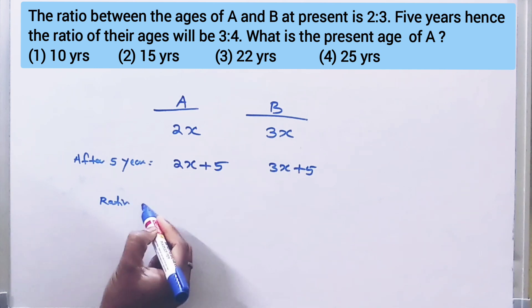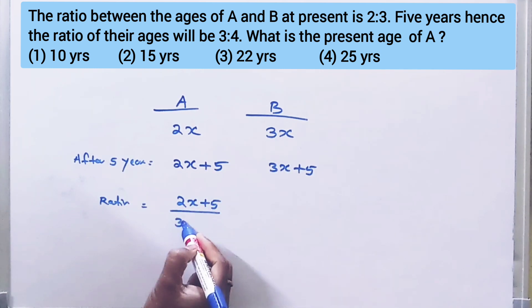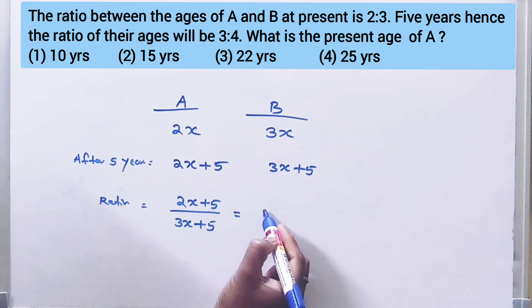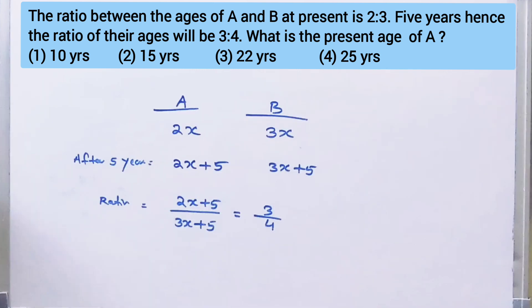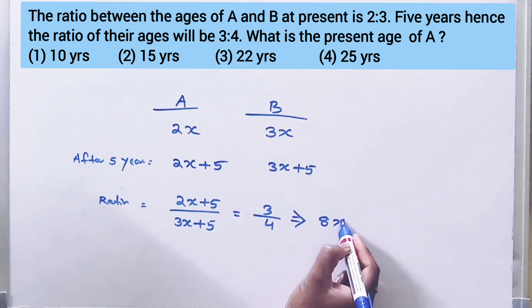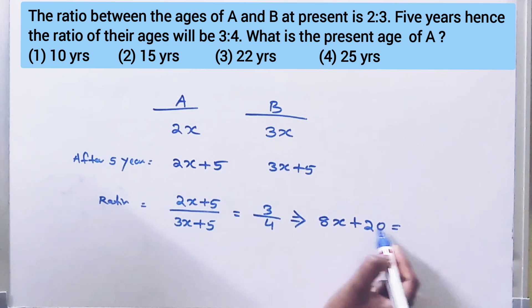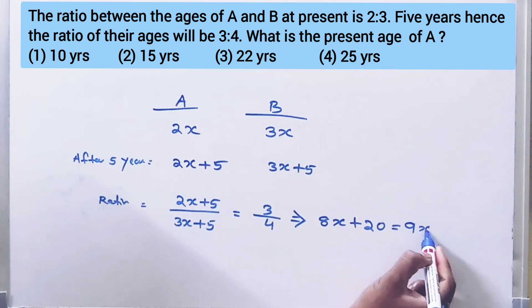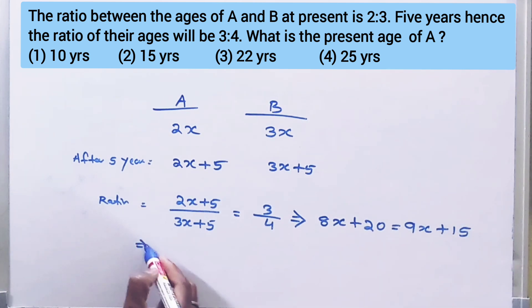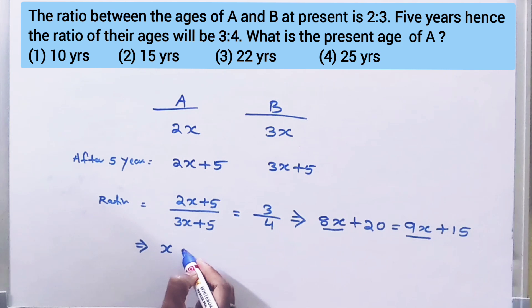5 years after, the ratio of A to B gives us: 2x plus 5 divided by 3x plus 5 is equal to 3 by 4. That implies 8x plus 20 is equal to 9x plus 15.